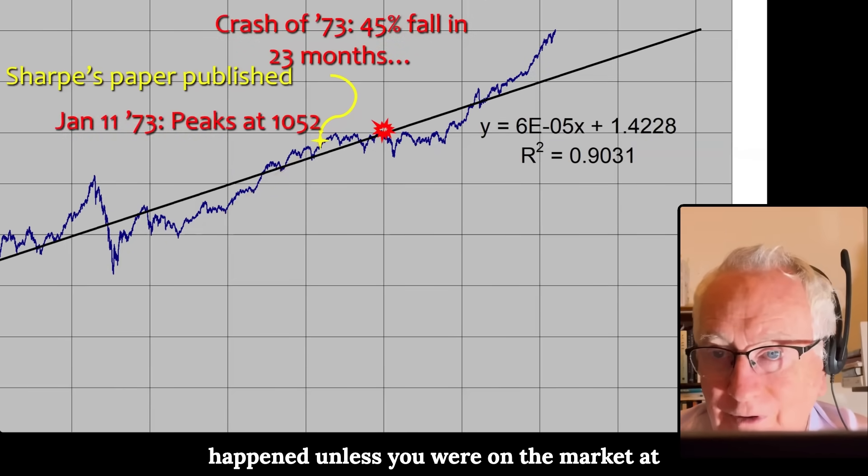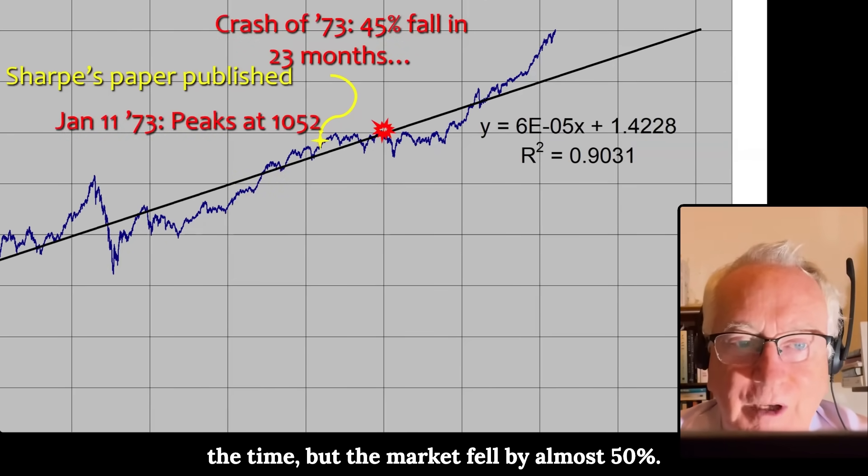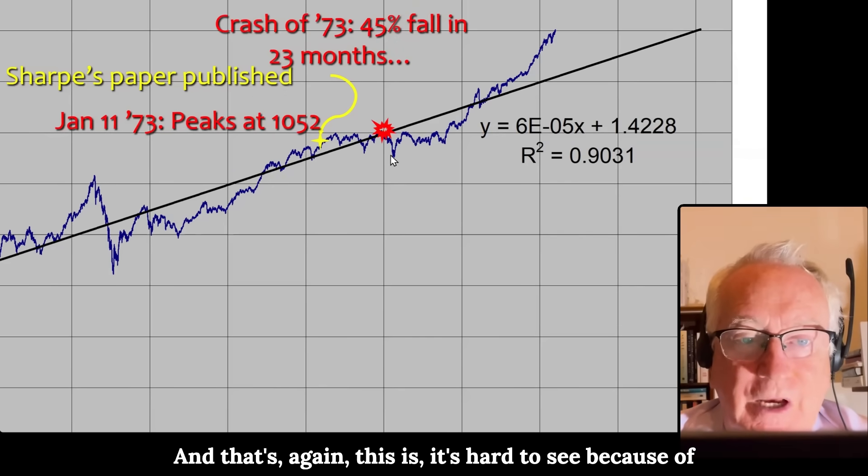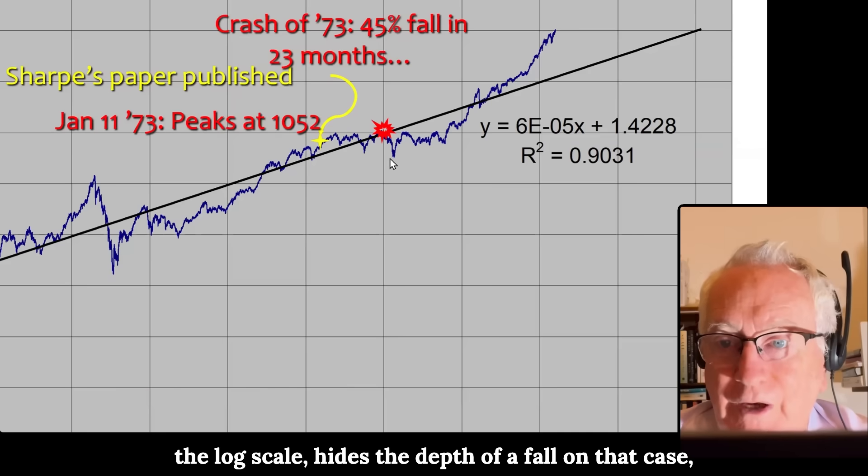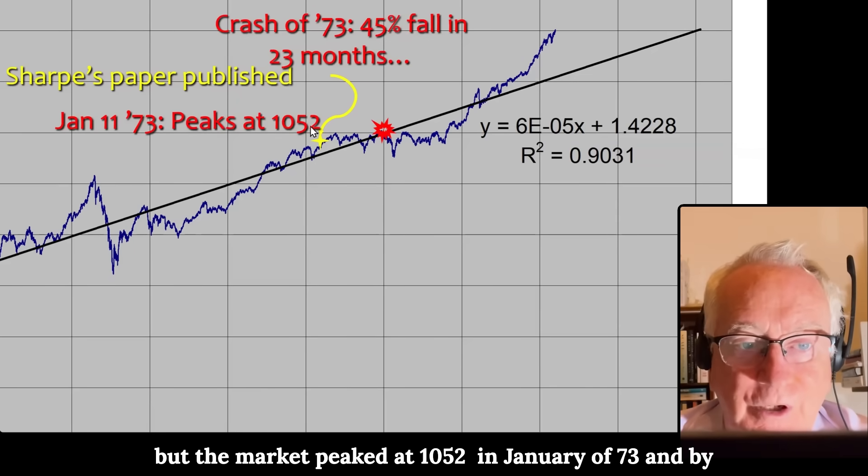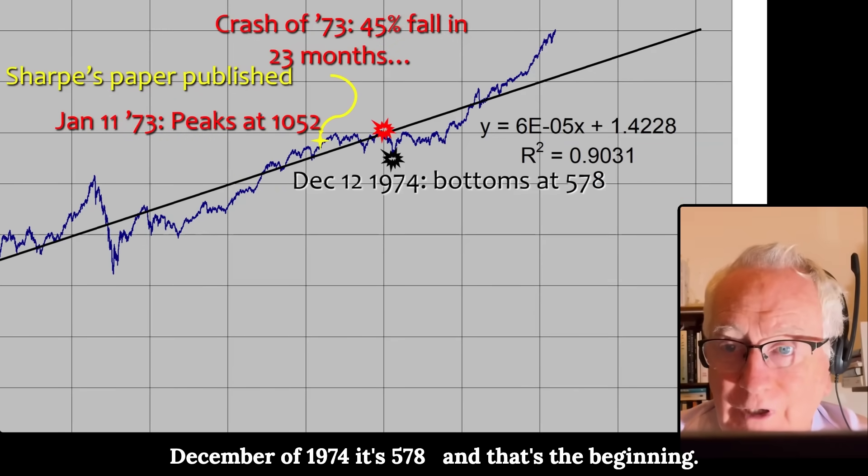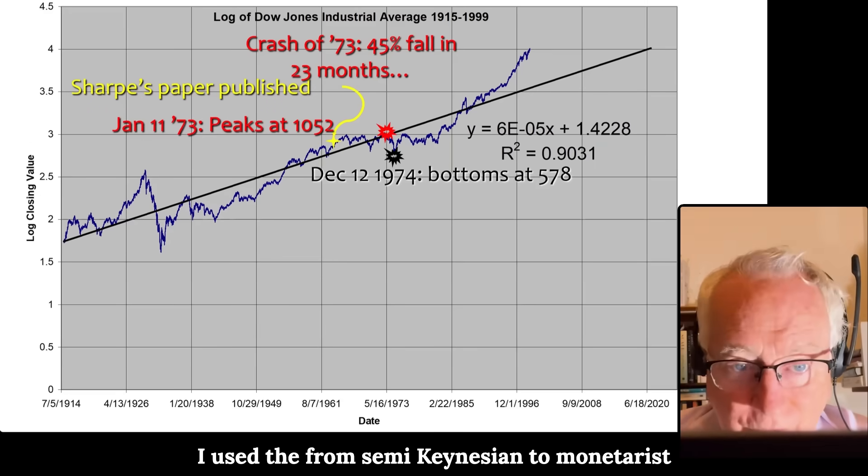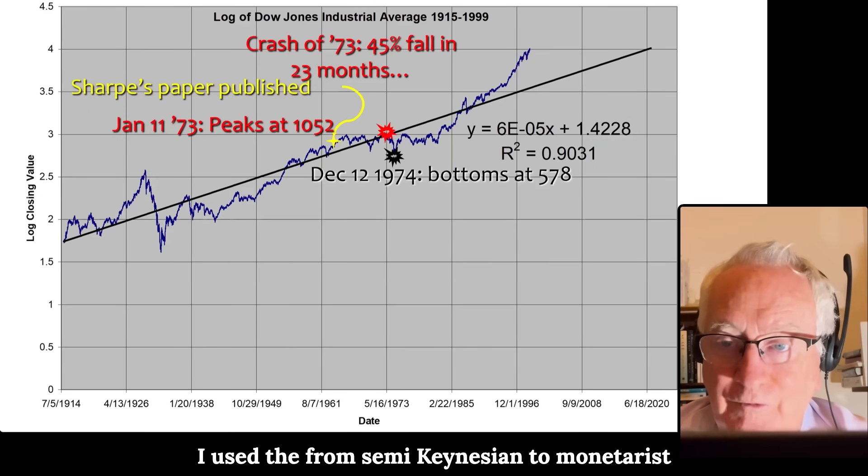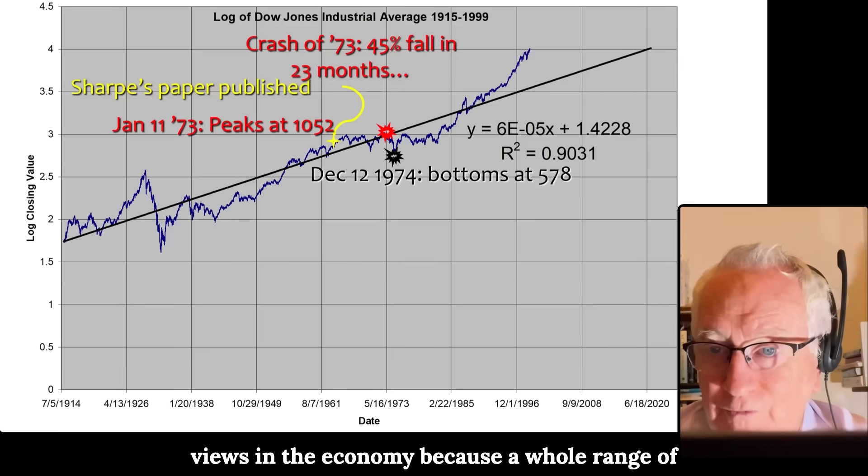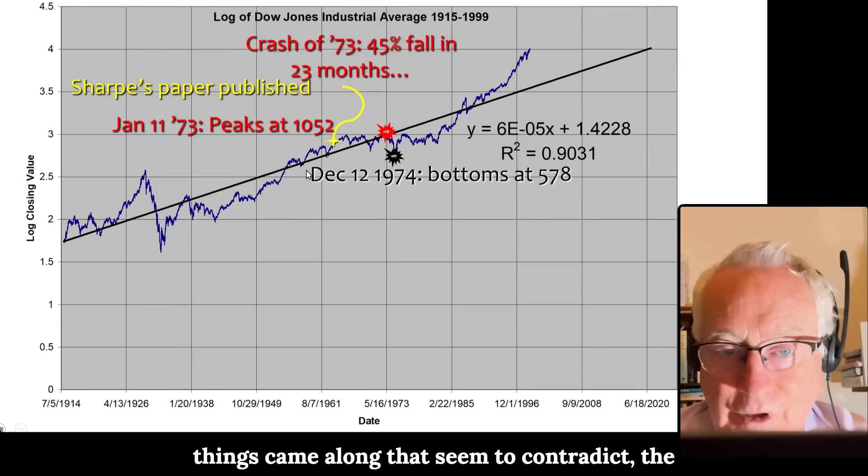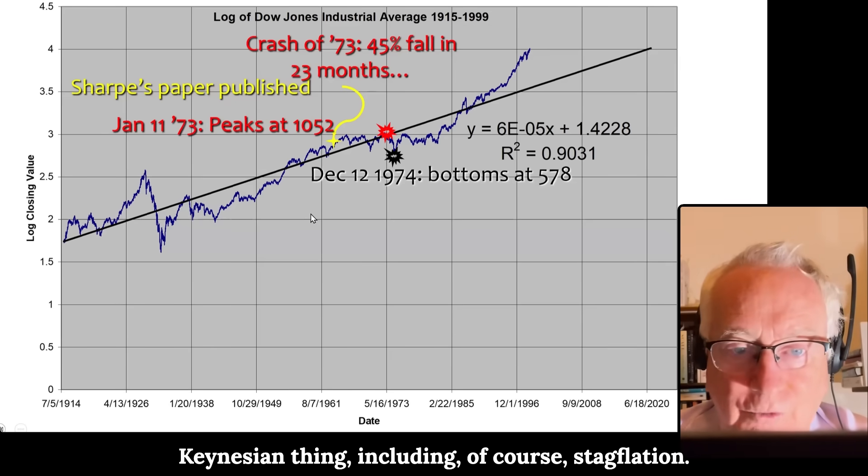Now most of you wouldn't even know this happened unless you were on the market at the time, but the market fell by almost 50%. And that's again, this is, it's hard to see because the log scale hides the depth of a fall on that case, but the market peaked at 1052 in January of 73 and by December of 74 it was 578. And that's the beginning. I used that as the indicator where we flipped from semi-Keynesian to monetarist views in the economy, because a whole range of things came along that seemed to contradict the Keynesian thing, including of course stagflation.